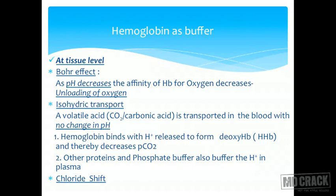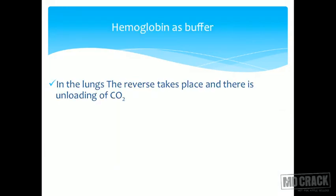In between all this, there is something called the chloride shift. Bicarbonate formed in the RBC goes out and chloride enters into the RBC — that is at the tissue level. At the lung level, the opposite of all this takes place: the chloride shift is reversed, all these reactions go in the opposite direction, and carbon dioxide is released in the lungs.